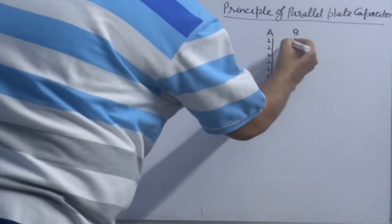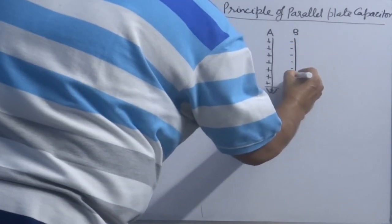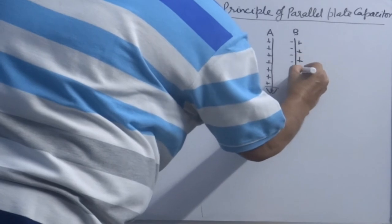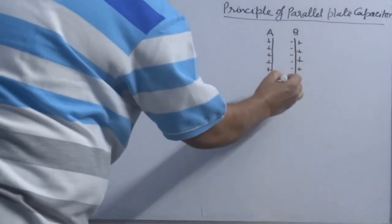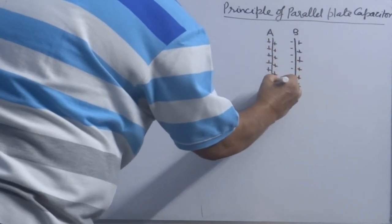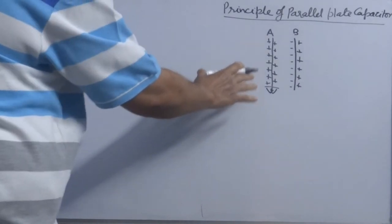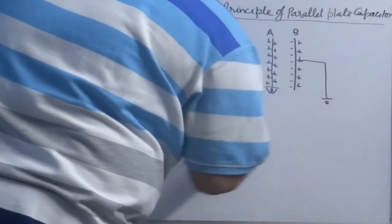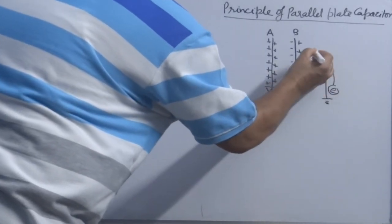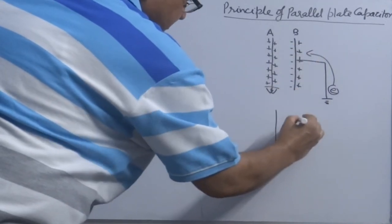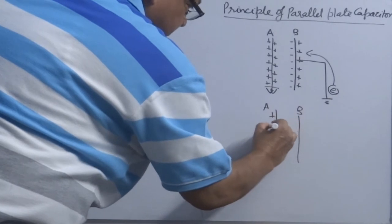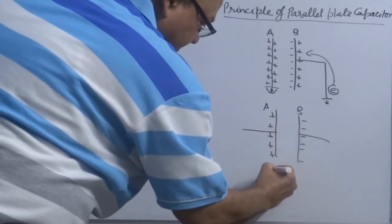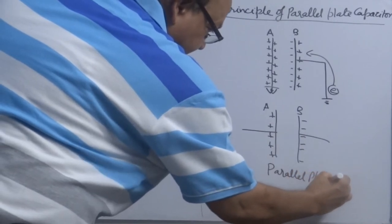When you bring the uncharged plate B near plate A, a negative charge is induced on the surface of plate B towards A, and positive charge induces on the other side. This negative charge will induce more positive charge on plate A. Now ground the outer surface of plate B. Electrons will move from ground to plate B and neutralize the positive charge there. Eventually you have two plates — one carrying positive charge and the other negative charge — and you have obtained a parallel plate capacitor.